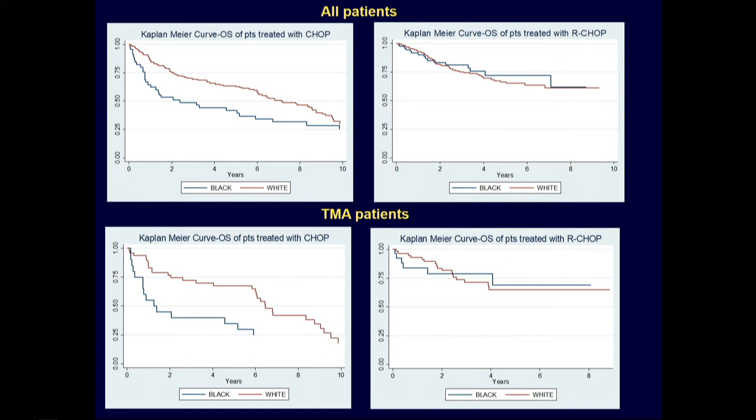This suggests that in addition to socioeconomic factors associated with differences in treatment, there may also be biological factors associated with these differences in outcome. Thinking back to the multilevel model from Dr. Rees — encompassing biological, social, and economic factors — we need to consider all those factors when thinking about how treatment disparities occur by race. So we've gone to actually look at the biology by race in diffuse large B-cell lymphoma, much in the same way similar work has happened in breast cancer.